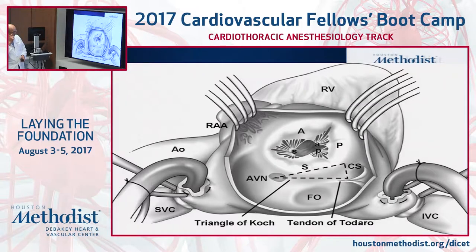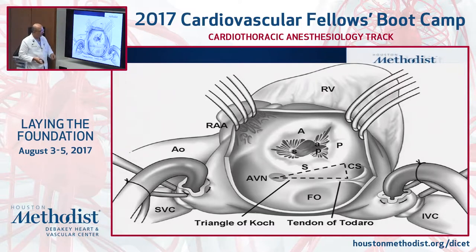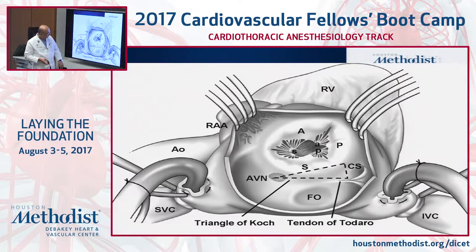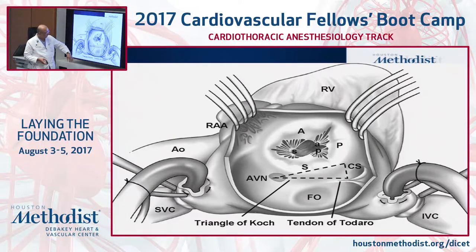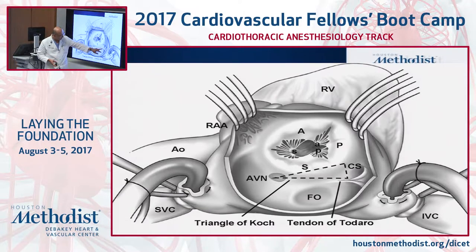From a surgeon's perspective — head on the left, feet on the right — with bicaval cannulation you open the right atrium and look at the tricuspid valve. The tricuspid valve has three leaflets: the anterior leaflet, which is the biggest; the posterior leaflet, which is small; and the septal leaflet, which extends along the septum. The fossa ovalis is here, with the left atrium on the other side. The important anatomical landmark is the triangle of Koch, bounded by the septal leaflet and the coronary sinus at its base.